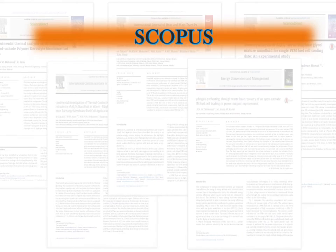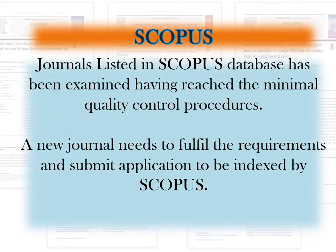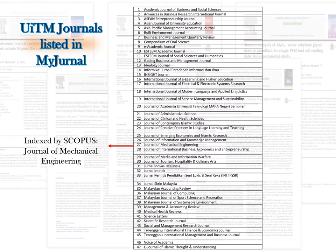Scopus database journals have been examined to have reached minimal quality control procedures — a new journal needs to fulfill requirements and submit an application to be indexed by Scopus. Scopus is run by Elsevier Publishing Company and covers a wide range of journals, conference proceedings and books. In UITM, there are 47 journals published, but only one is indexed by Scopus — the Journal of Mechanical Engineering — which you can refer to if you want to publish within UITM.